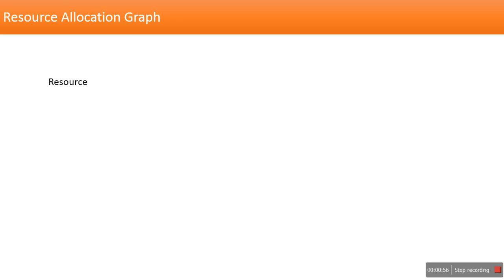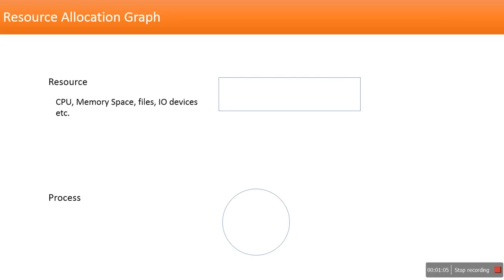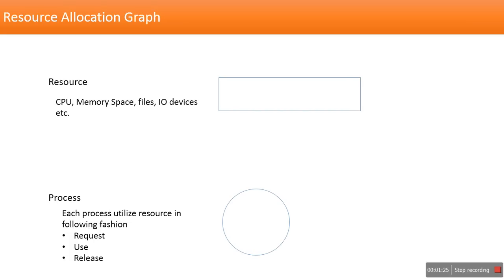In computing, resources include the CPU, files, and I/O devices. Resources are represented with a box and processes are represented as a circle. When a process needs a resource, it first requests it. If that resource is available, it will be allocated to that process, and the process will use it.